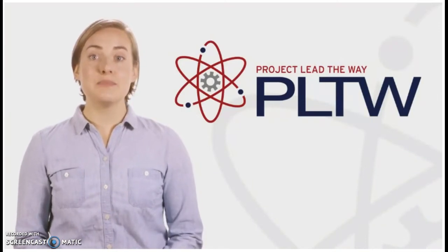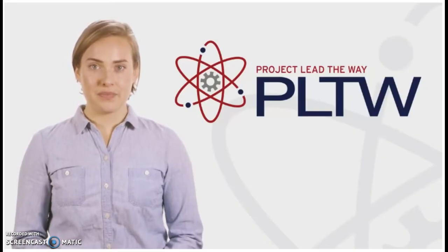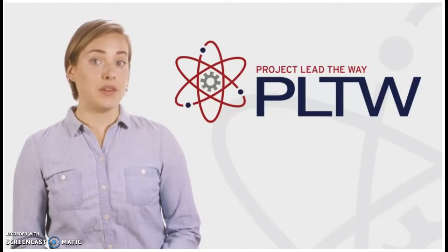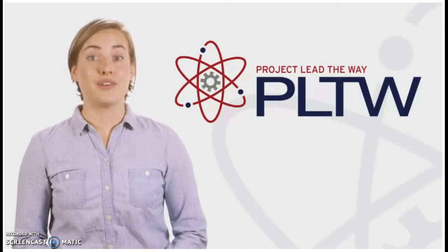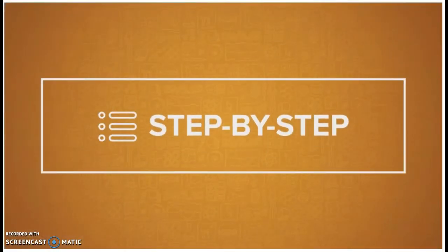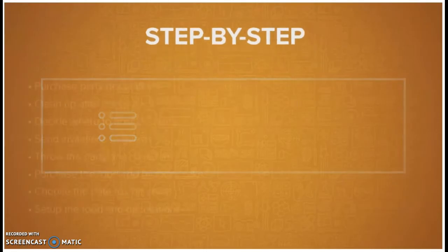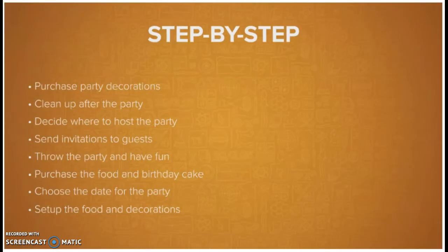Now that we have the steps, let's put them in the correct order. How would you organize this algorithm so you can plan an awesome party for your friend? One way to organize an algorithm is to use a step-by-step list, similar to a recipe. Each step clearly details what is needed to complete the task and is in the correct order in the list.